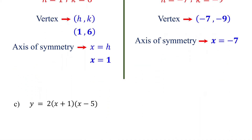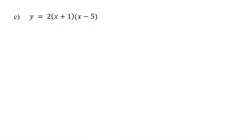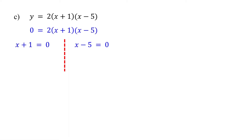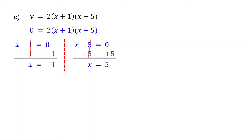What if the quadratic function is given in factored form? How do you find the vertex in this case? For a quadratic function in factored form, start by finding the axis of symmetry using the x-intercepts. To find the x-intercepts, first set y equal to 0, then set each factor equal to 0 and solve for x. Solving the first equation, x equals negative 1; solving the second equation, x equals 5. So the x-intercepts are negative 1 and 5. Notice that the leading coefficient is positive, so the parabola opens upward.